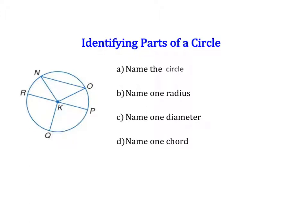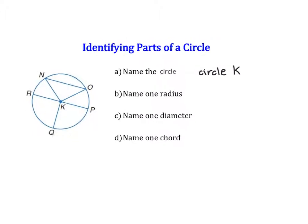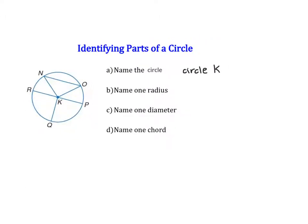Let's start by practicing naming a few different parts of this circle. The first thing is to name the circle. The circle is always named based on the center. So we could call this circle K. We could make a symbol with a dot signifying the center and say circle K like this.